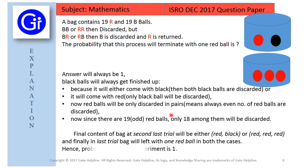So the probability of this experiment is always 1, because we are left with a red ball in all cases.